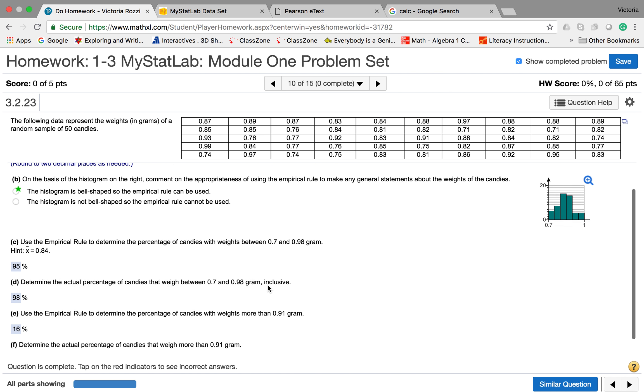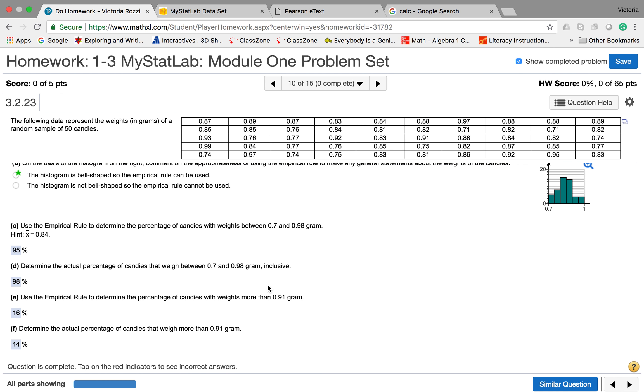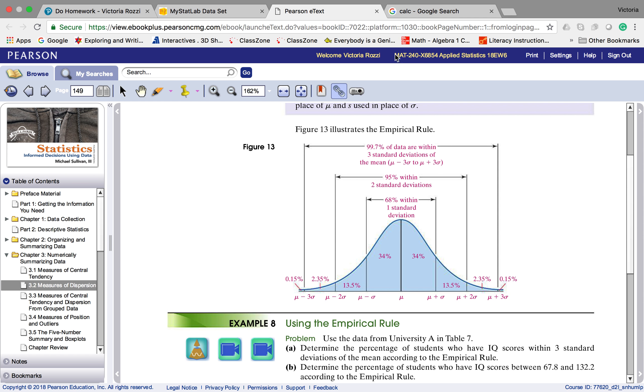Now, what is the empirical rule? This is how you're going to be doing C, D, E, and F. It's all the empirical rule. I want to show you a picture from your text. This is on page 149 of your text, and this illustrates the empirical rule. So what you do is you put your mean in the middle. We're going to be using x bar because we're doing a sample. You would put your mean in the middle, and then you're going to keep adding one standard deviation to get these barriers here.